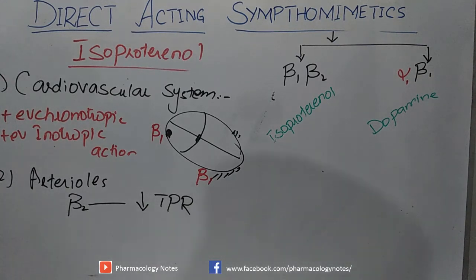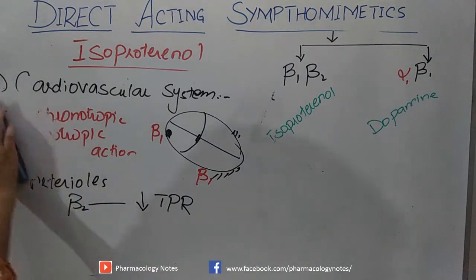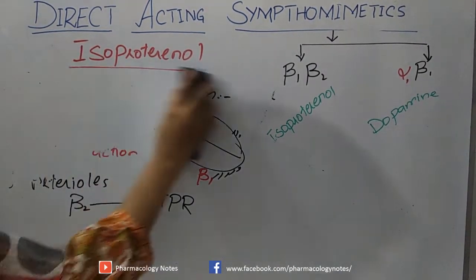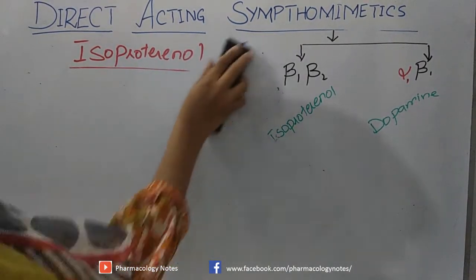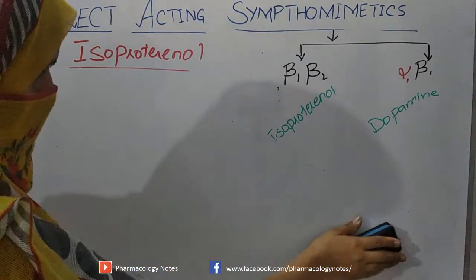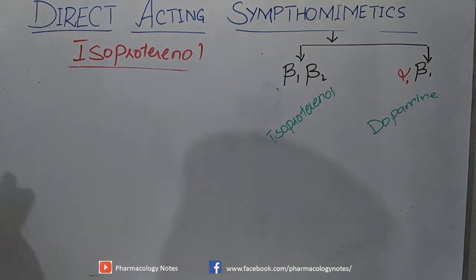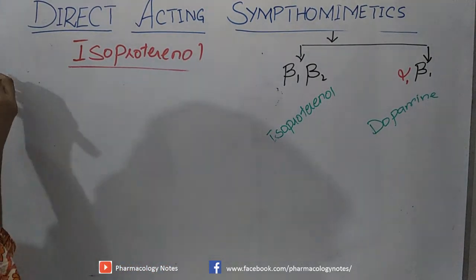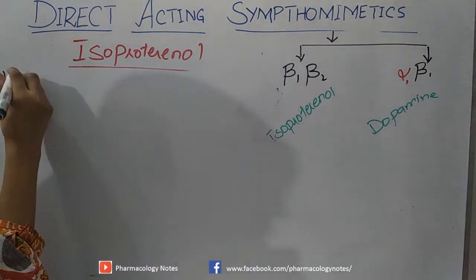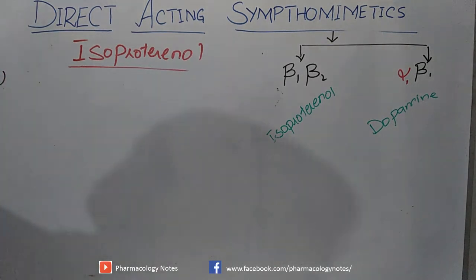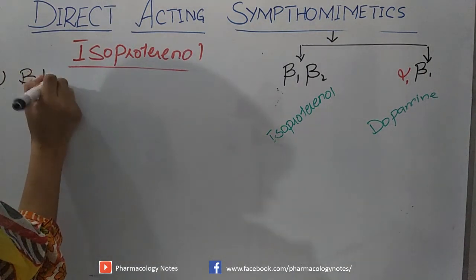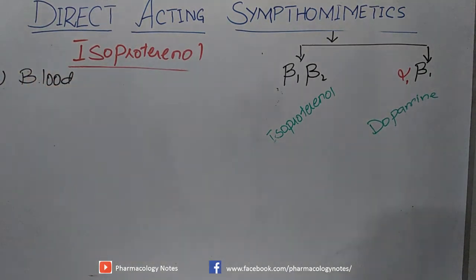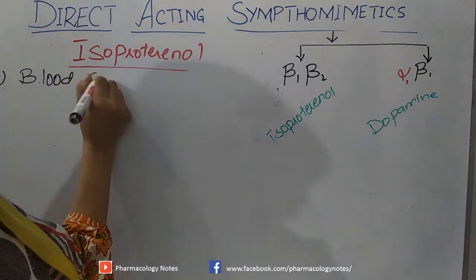What happens with blood sugar levels? On the cardiovascular system, isoproterenol causes positive chronotropic and positive inotropic action, and on arterioles it decreases peripheral vascular resistance. The third action involves glucose metabolism — specifically, its effect on blood sugar.